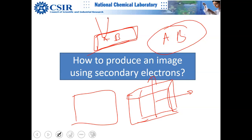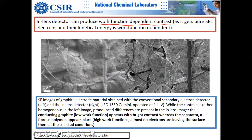The energy of secondary electrons will vary based on the work function. Previously this was not possible due to interference from SE2, SE3, SE4, and from the bias voltage which destroys subtle information. Surface charge can also destroy work function contrast, so the sample must be well-grounded to preserve it.